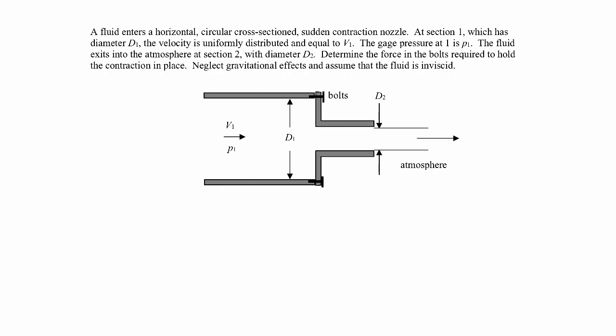We have a velocity v1, and because of conservation of mass, it's going to change the velocity to v2. That change in linear momentum will result in a force — the force that this section applies to the fluid. We're going to apply linear momentum, so let's first define a coordinate system: we'll call this the x direction, and it's fixed in place, so we don't have to worry about any acceleration effects.